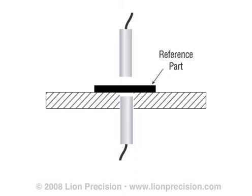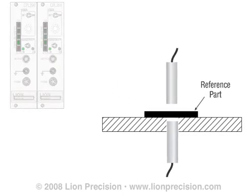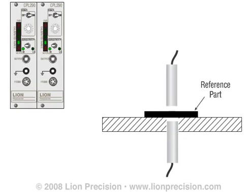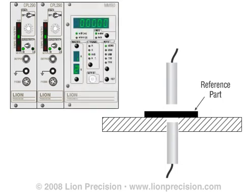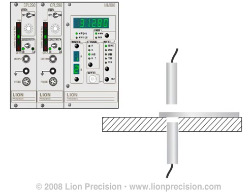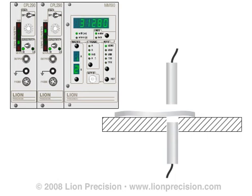To perform a two-channel thickness measurement, first place a conductive part of known thickness between the two sensors. Then adjust sensor positions to measure the top and bottom surfaces of the part. The sensors should be positioned near the center of the measurement range to allow for positive and negative deviation from the reference measurement. Adjust the individual sensor outputs for zero volts and a displayed reading of zero. Then replace the reference part with a part to be measured. Read the thickness deviation from a display with summing capabilities, or calculate the deviation by adding the two output voltages and converting to dimensional units. Note that the individual sensors change in response to the deformity of the target, but the final thickness measurement is unaffected by the distortion.